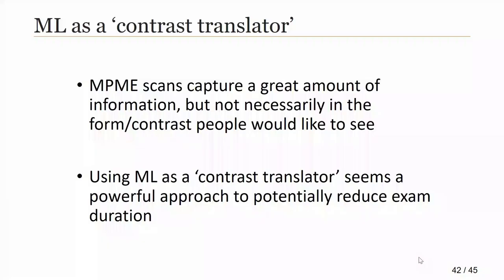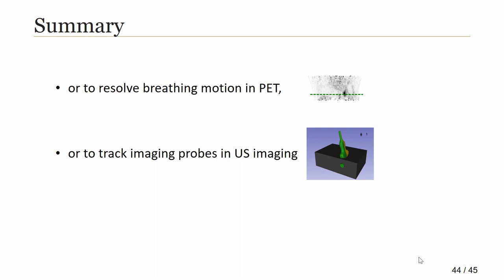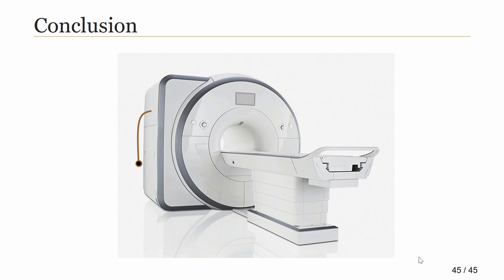We think that our multi-pathway, multi-echo scans capture a great amount of information about the object, but not necessarily in the right format for radiologists. Using machine learning as a contrast translator seems like a powerful approach to potentially reduce scan time by converting those data into any different format needed. In summary, we developed an ultrasound-based OCM sensor that can be used to boost temporal resolution in MRI, mimic ECG signals, resolve breathing motion impact in PET, or track imaging probes in ultrasound imaging. We hope this sensor might prove useful enough across a large number of applications to become a standard accessory on MRI scanners, and we would very much like to develop a wireless version.